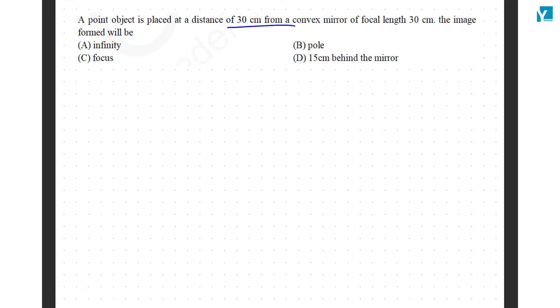A point object is placed at a distance of 30 cm from a convex mirror of focal length 30 cm. So, a convex mirror of focal length 30 cm, an object is placed at minus 30 cm.